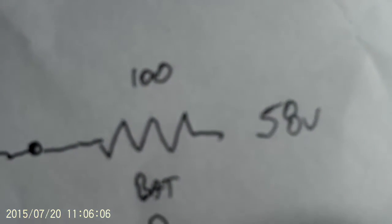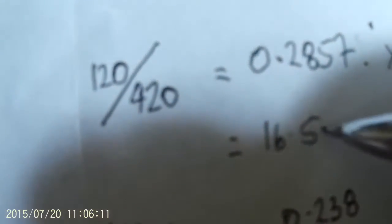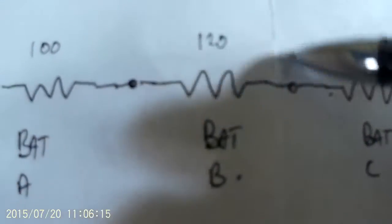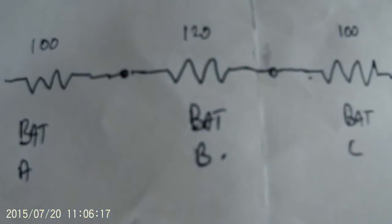Multiply that by your absorbed voltage, which in my case is 58 volts, and you come up with 16.5 volts. So you're going to have 16.5 volts across that one with the higher internal resistance.